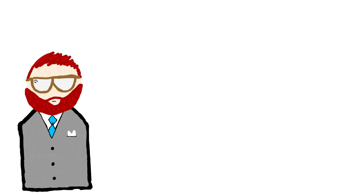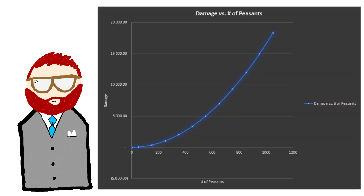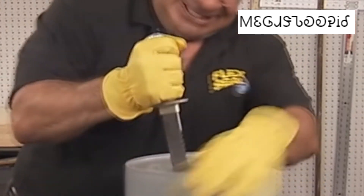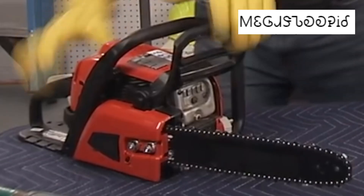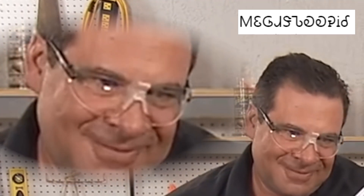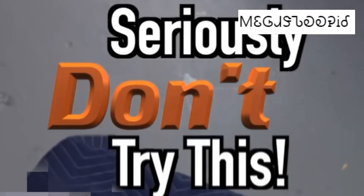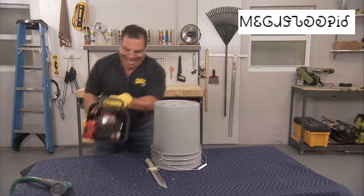I was wondering how this would look with different numbers of peasants, so I created a graph. If you had a total of 1,050 peasants, you'd be doing a max damage of 18,293 damage in one round of combat. That's a lot of damage — now that's a lot of damage!